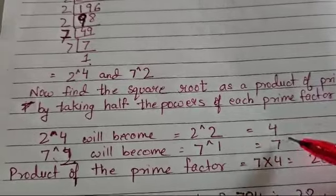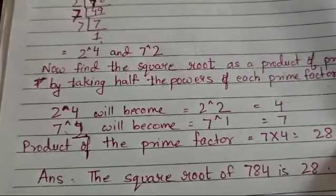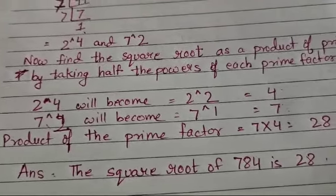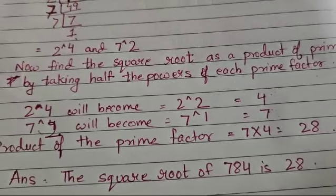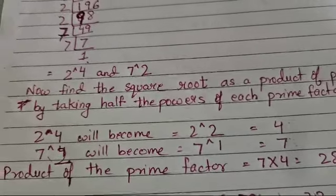So you have to multiply them, the product of the prime factors. When we multiply 7 into 4, you get 28. So the square root of 784 is 28. I hope you understood the sum. Thank you very much.